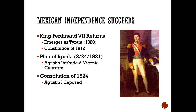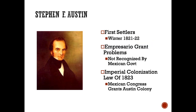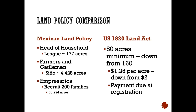The independence movement began with the Plan of Iguala. Agustín de Iturbide became president and then changed his title to Emperor Agustín I before being deposed. Mexico — the new United States of Mexico — adopted a new constitution in 1824. This left Moses Austin's son, Stephen F. Austin, getting ready to bring his first settlers in. Because the impresario grant his father had negotiated with the Spanish government was not recognized by the new Mexican government, Stephen F. Austin went to Mexico City to help write a new colonization law. The Imperial Colonization Law of 1823 granted Austin his colony.